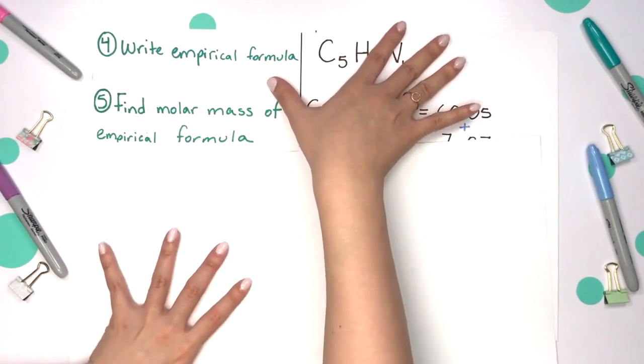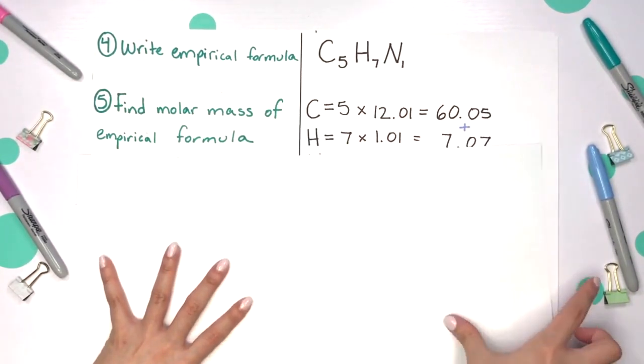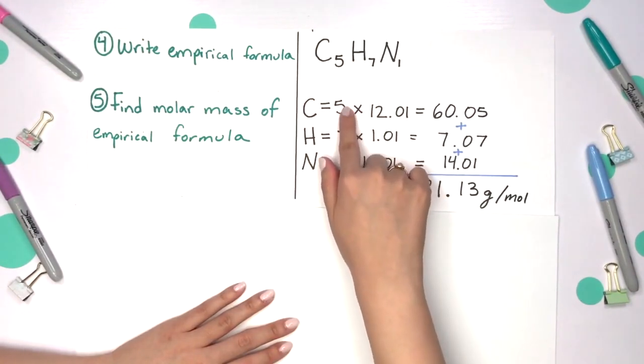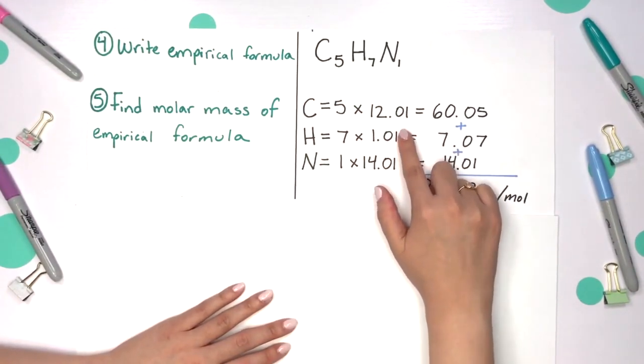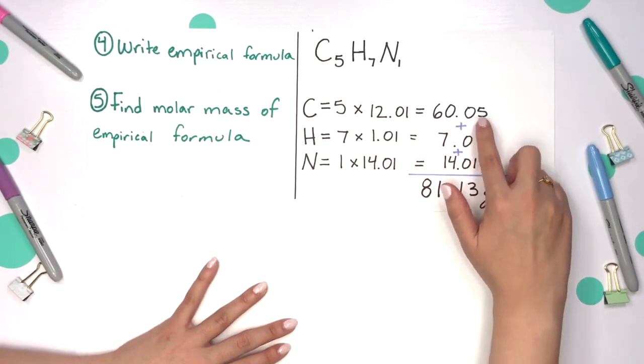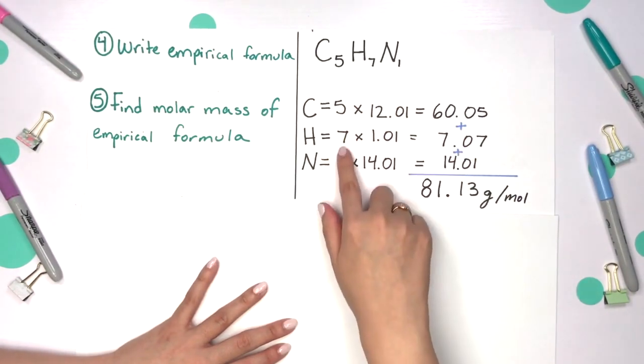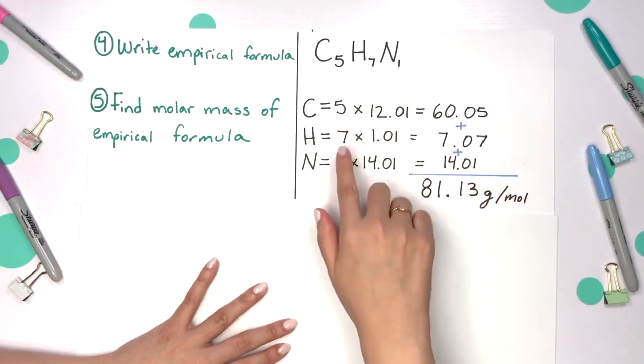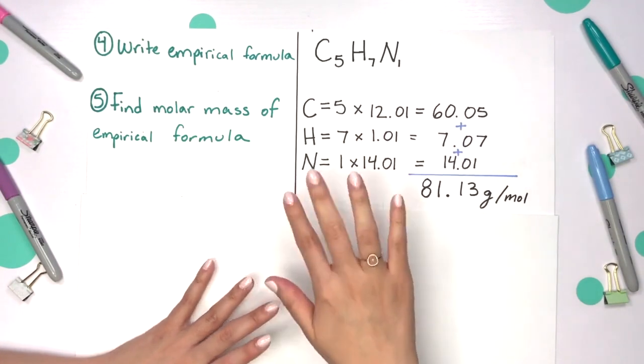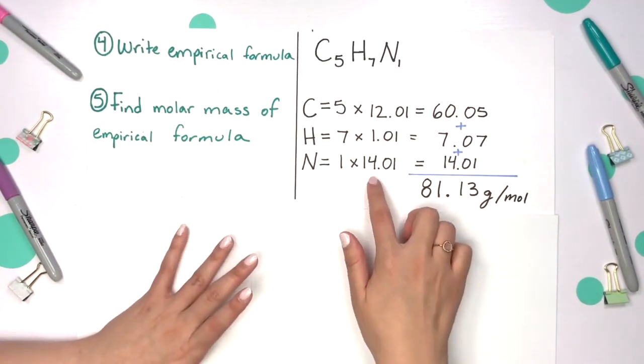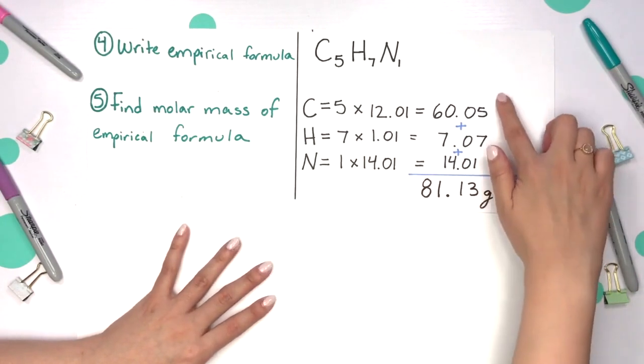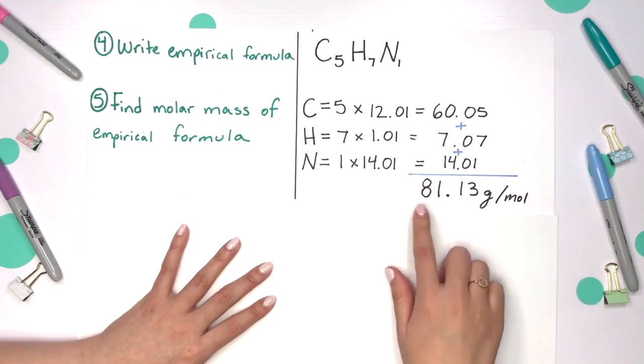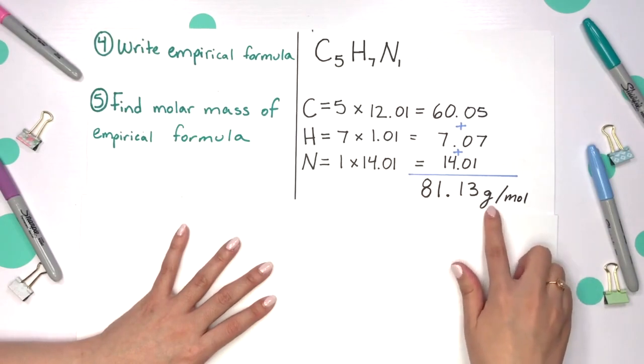The next step is to figure out the molar mass of this empirical formula. Start with your carbon, which we have five of them, and multiply by the individual molar mass of carbon. We'll get 60.05. Do the same for hydrogen. Now there are seven times that 1.01, and you get 7.07. But there's only one nitrogen, so you don't even have to really multiply. It's one times 14.01, which is itself. We'll add all these values together, and your molar mass of your empirical formula gives you 81.13 grams per mole.